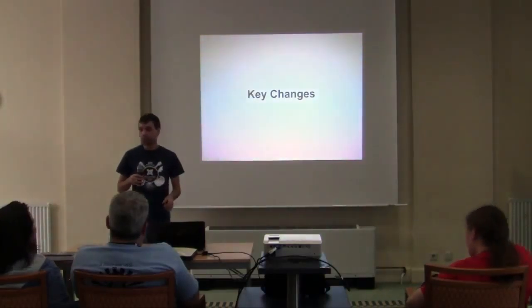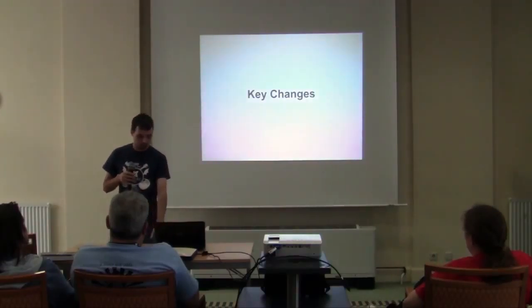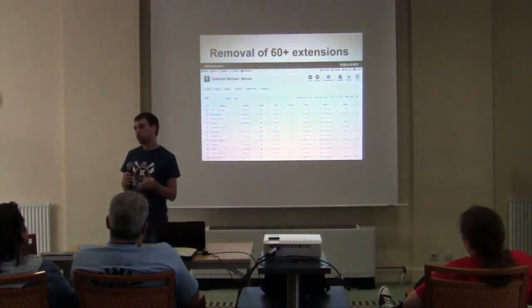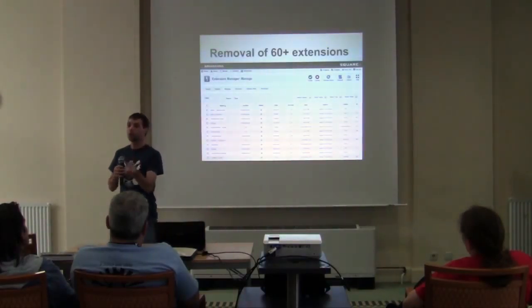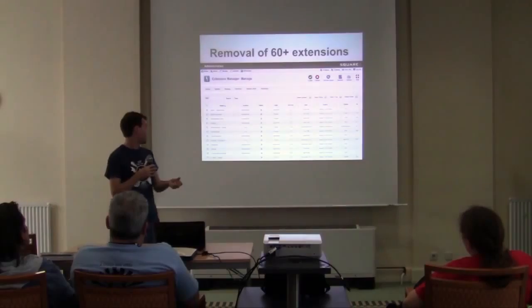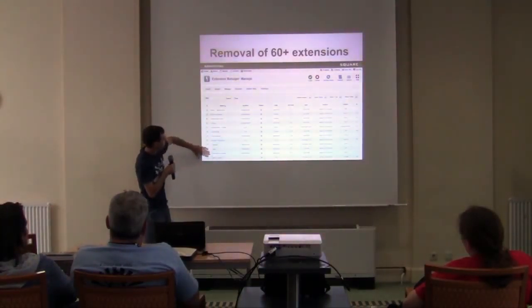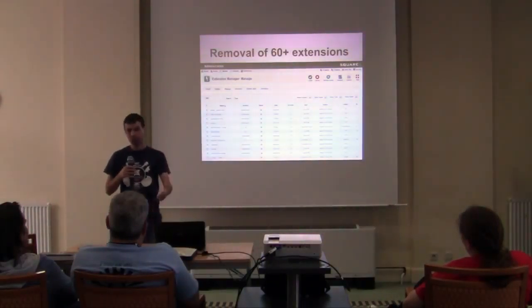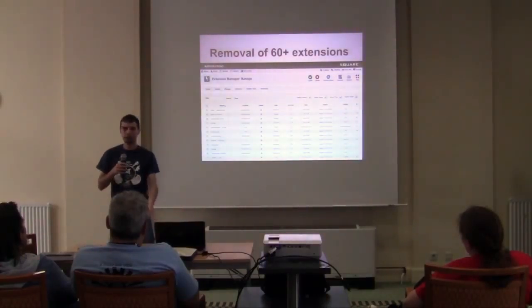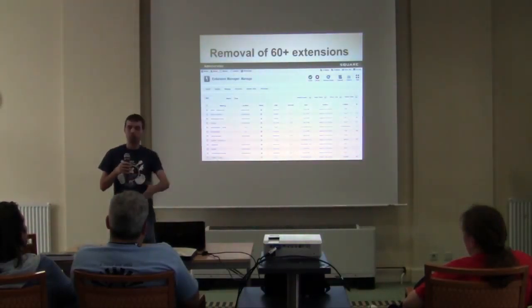Let me go over some of the key changes — things that will help you see where it actually differs. The first one is that I removed over 60 extensions. There are 124 in Joomla. When you install Square One, you don't see a lot of those things. That includes plugins, modules, components, and templates. There are about seven templates in Joomla — who knew? So all of those have been removed.